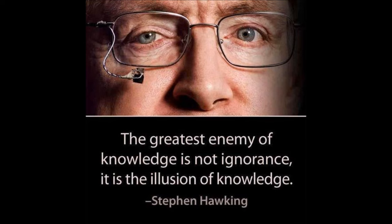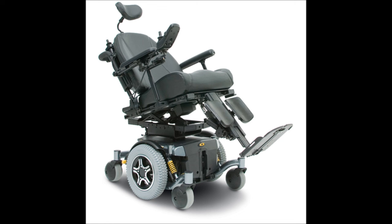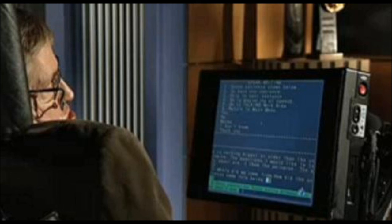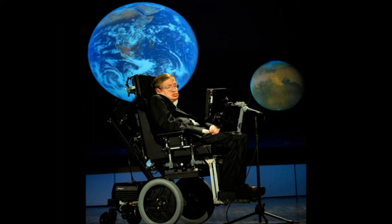I communicate with a computer system in a box in the back of my wheelchair. This system was put together for me by David Mason of Cambridge Adaptive Communications. On the computer, I run a program called Equalizer. A cursor moves across the upper part of the screen. I can stop it by pressing a switch in my hand. In this way, I can select words which are printed on the lower part of the screen.